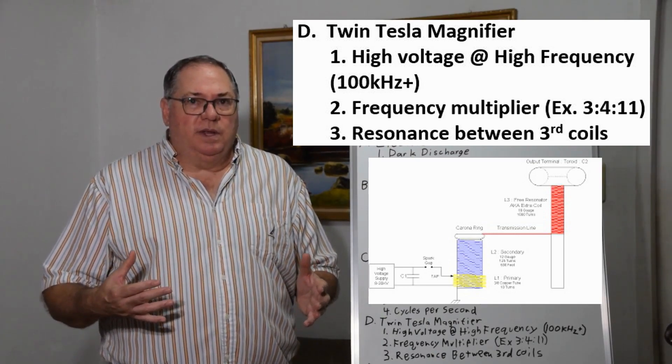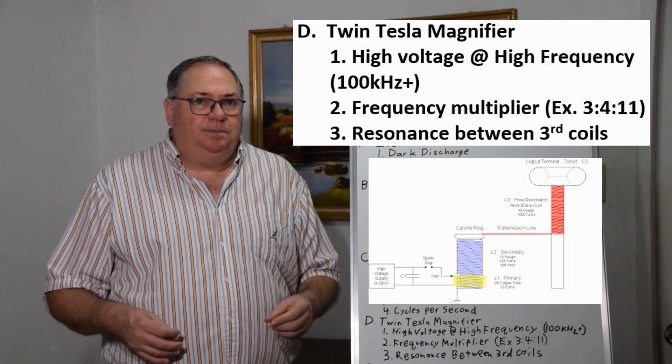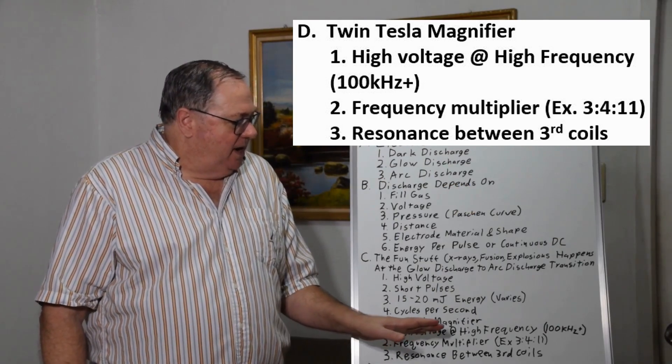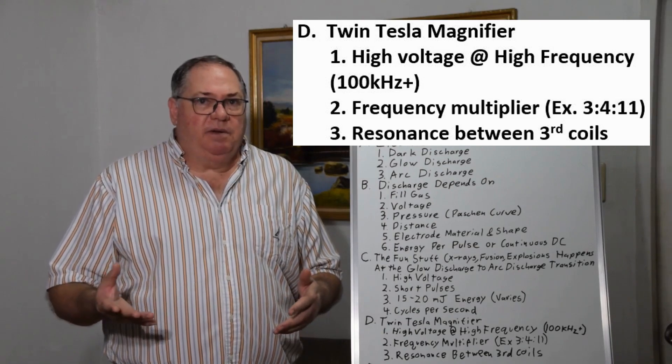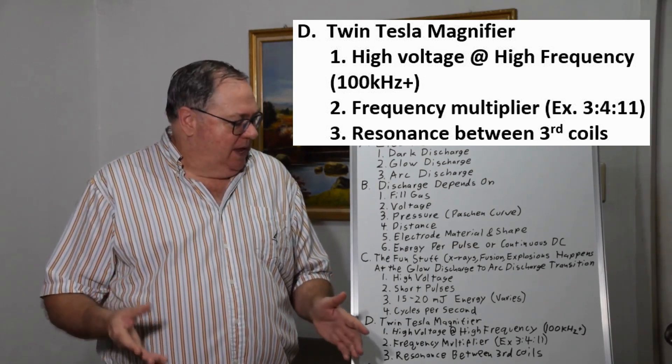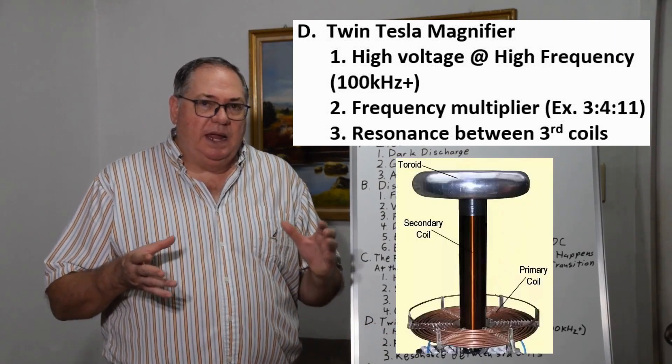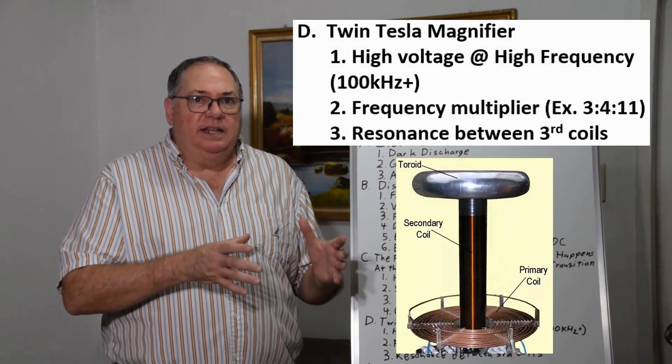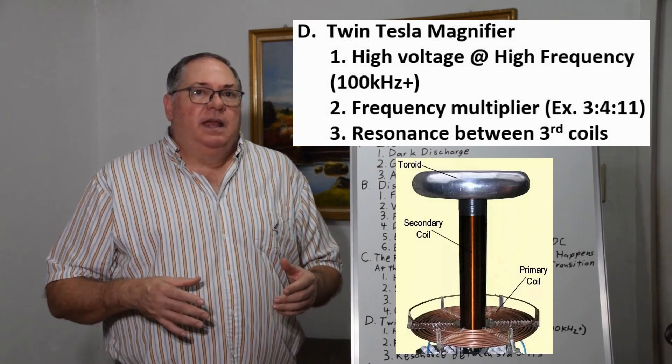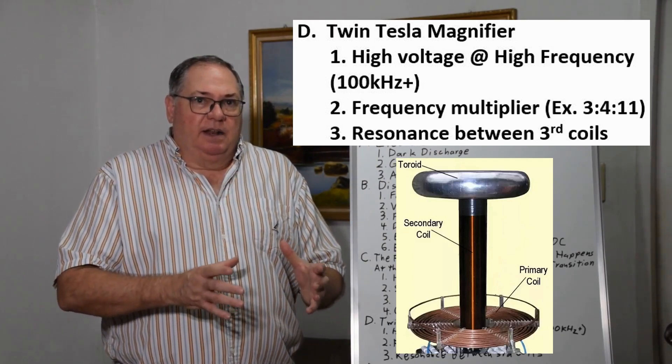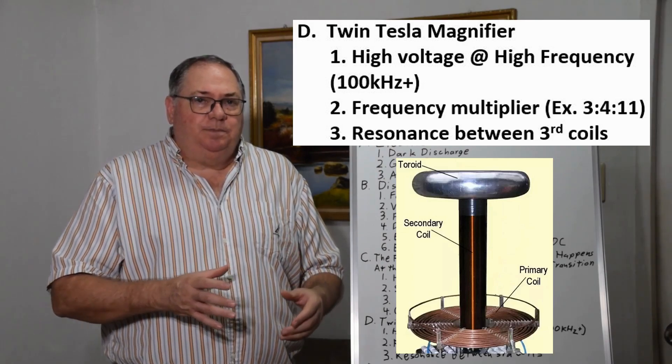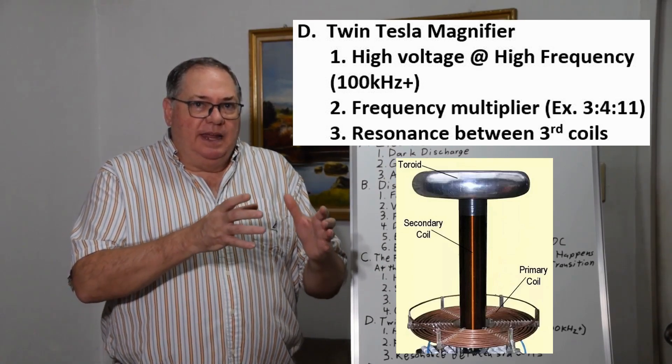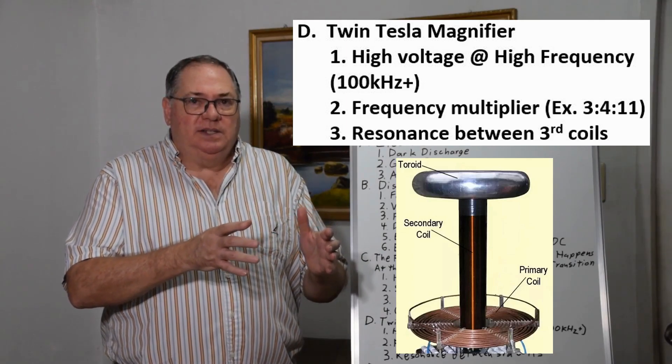We found we could get much higher frequencies of 100 kilohertz or more. With a Tesla coil, you have a primary and secondary that are matched to resonate and achieve high voltage through large winding ratio. But the secondary's resonance is inhibited by coupling to the primary.